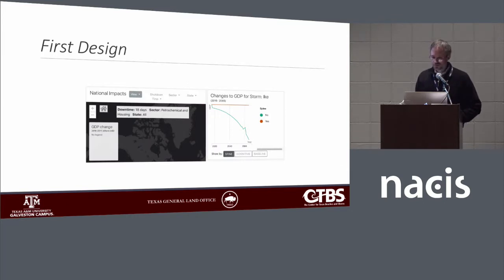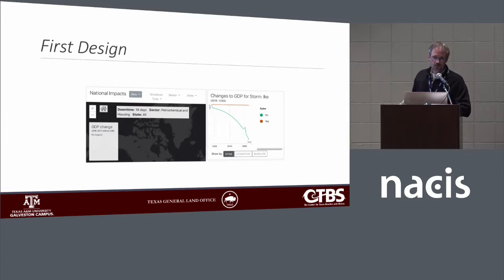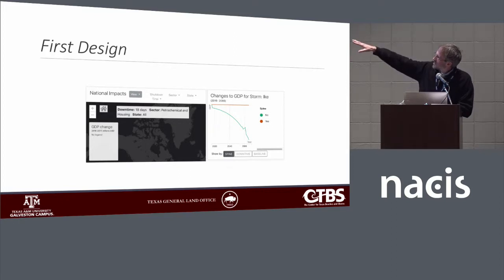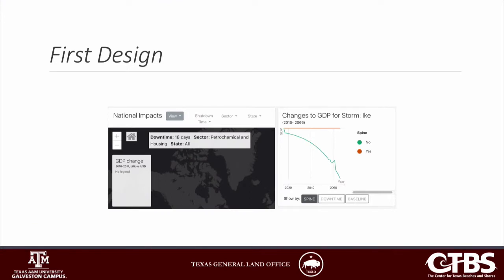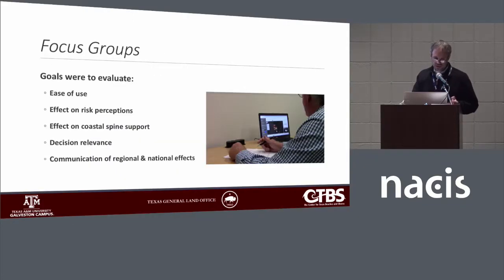For the national tab, I've zoomed in on parts of that design. We initially had a line graph and lots and lots of options. On the left, you see many different drop-down options — things like how long the petrochemical plants on the ship channel would be shut down, what sector to look at for impacts, which state. It was just too much. The line graph was confusing, and that was borne out by our focus group results.